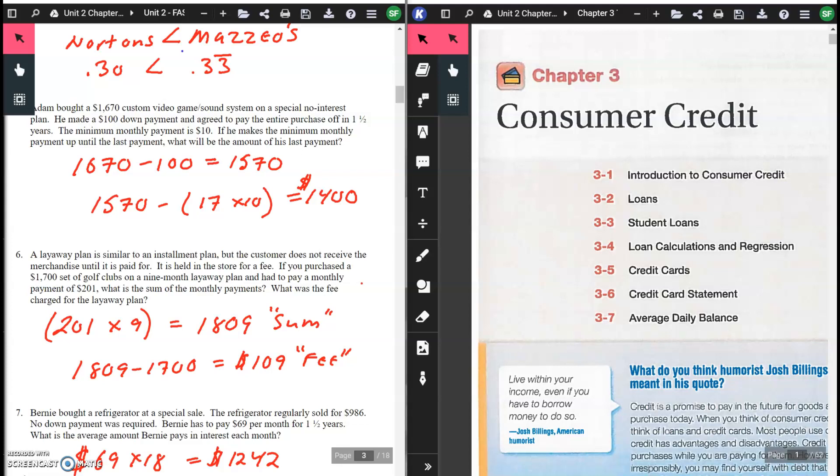The amount of his last payment would be $1,570 minus $1,400, which gives you $170 for his last payment. His 18th payment would be $170.